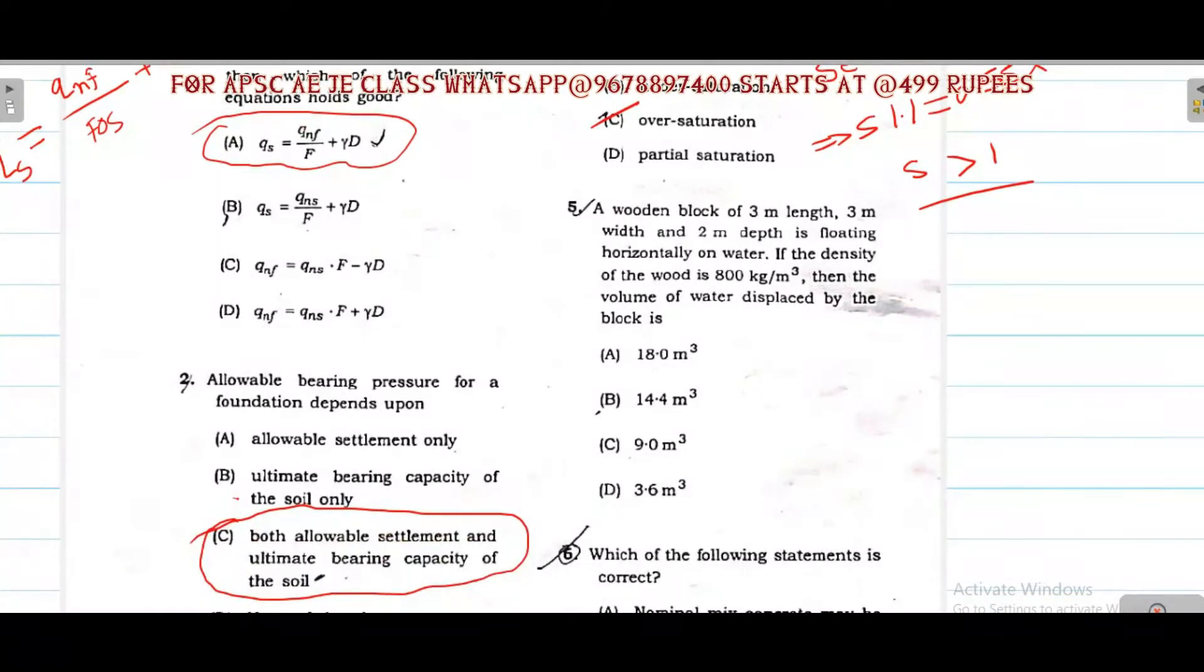Next fluid mechanics question. One wooden block, 3 meter length, 3 meter width, 2 meter depth. The volume is 3 into 3 into 2. And density is 800 kg per meter cube. So what is the water displaced? First the volume is 3 into 3 into 2, that means 18. The density is 800 kg per meter cube. So relative density with respect to water is 0.8. If you multiply 18 into 0.8, you will get 14.4. So option number B is correct.